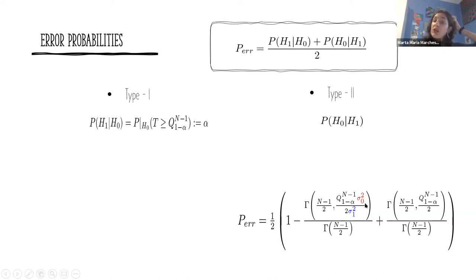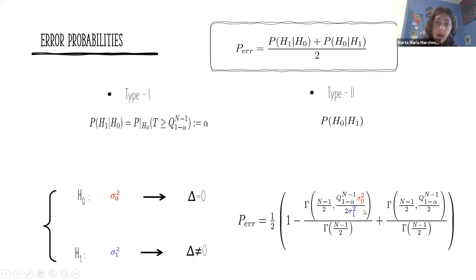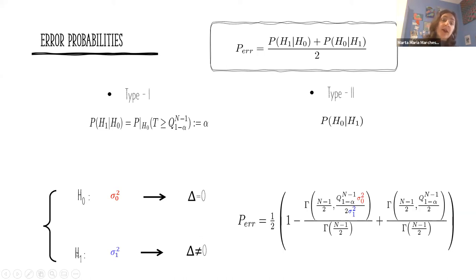We computed the total error probability — the sum of both type one and type two error probabilities — for our system. We found it depends only on the two variances for the two channels: the null hypothesis channel with no CSL, and the alternative hypothesis channel with the CSL effect.